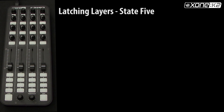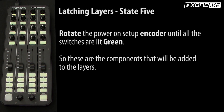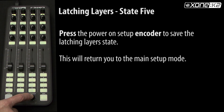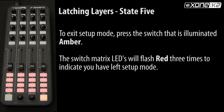In this example of latching layers, we have selected state 5, all controls. Rotate the power on setup encoder until all the switches are lit green. Press the power on setup encoder to save the latching layer's state. This will return to the main setup mode. To exit setup mode, press the switch that is illuminated amber.